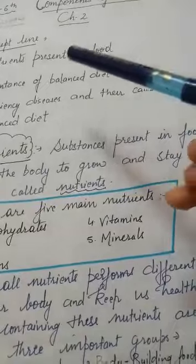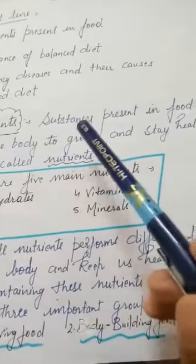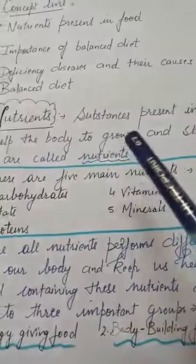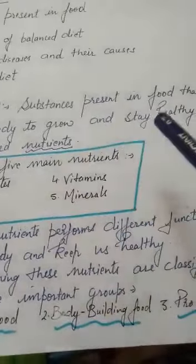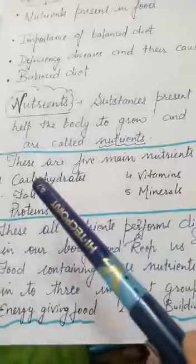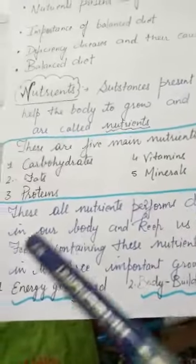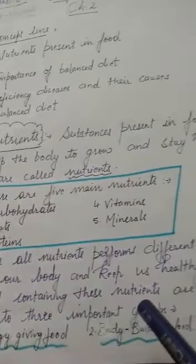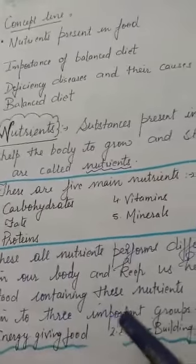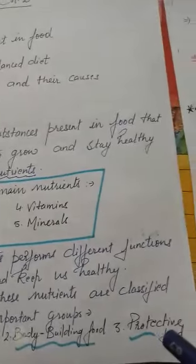Components means the several parts from which something is made — different types of nutrients. Nutrients are substances present in food that help the body grow and stay healthy. There are five main nutrients: carbohydrates, fats, proteins, vitamins, and minerals. These nutrients perform different functions in our body. Foods containing these nutrients are classified into three groups: energy giving food, body building food, and protective food.